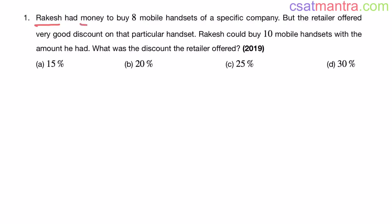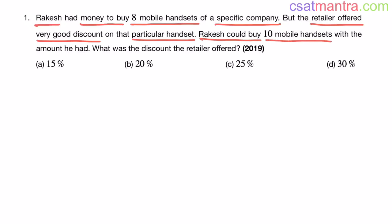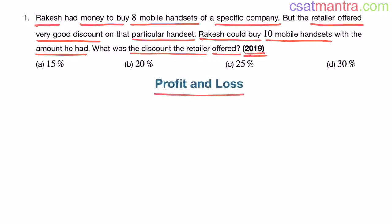Rakesh had money to buy 8 mobile handsets of a specific company, but the retailer offered a very good discount on that particular handset. Rakesh could buy 10 mobile handsets with the amount he had. What was the discount the retailer offered? This question is from 2019, from the profit and loss chapter.